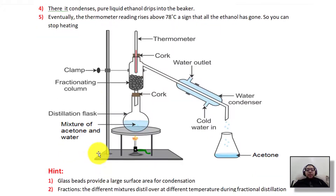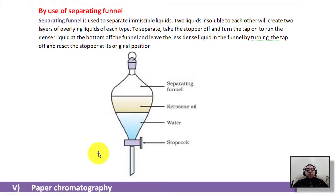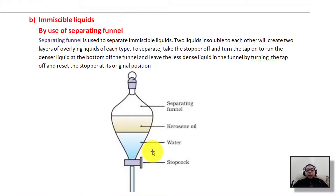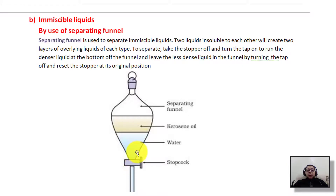In fractional distillation, we separate miscible liquids mixed together. When it comes to immiscible liquids, we use a separating funnel. In a separating funnel, the mixture is arranged in layers because the liquids are immiscible — they are not mixed together. The funnel has a stopcock or tap at the bottom that we can open to let liquid flow down.